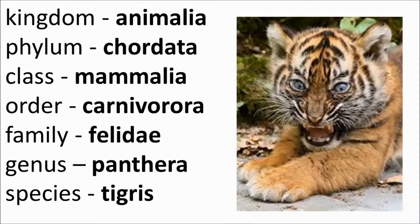The genus panthera includes tigers, lions, jaguars, and leopards. There are other cats that don't belong to that group, like the lynx. An organism is often referred to by its genus and species. A scientist would refer to a tiger as Panthera tigris. Do you know the one for human beings? It's Homo sapiens. All animals can be referred to by their genus and their species.